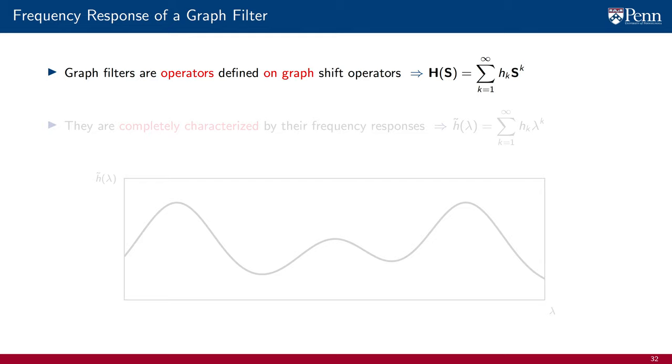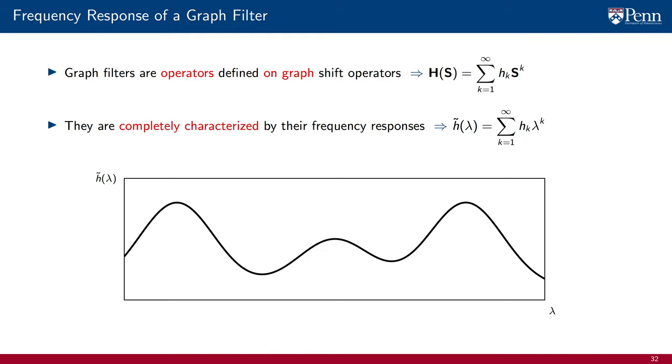It is not easy to understand what the effect of a graph filter is on a given graph signal. But in the frequency domain, the filter is completely characterized by its frequency response, which is just a polynomial on a scalar variable lambda. It becomes independent of the graph and also very easy to understand.